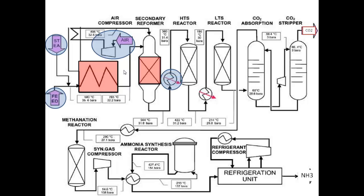Before entering the high temperature shift converter, which is the first reactor where CO is shifted to CO₂, the process gas high energy content is used to generate and superheat steam. Both the steam generator and the steam superheater are represented by the exchanger upstream the high temperature shift reactor. The gas enters that heat exchanger and is cooled to around 360 degrees Celsius, which is the inlet temperature of the high temperature shift reactor. The gas enters the HTS, where carbon monoxide in the gas stream reacts with H₂O steam and produces CO₂ and hydrogen. The reaction is exothermic and is accompanied by an increase in process gas temperature. As the conversion to CO₂ increases and the temperature increases, the rate of the shift reaction decreases as the reaction approaches equilibrium.